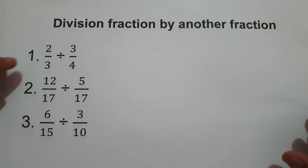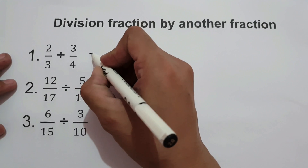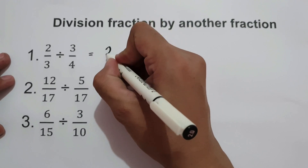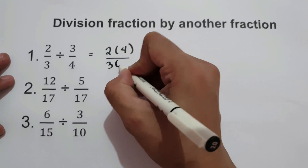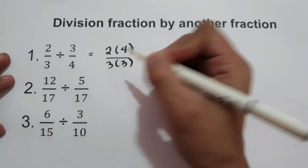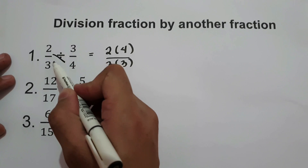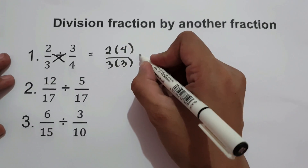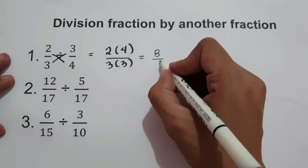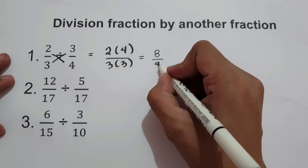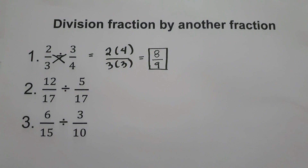For example, 2/3 divided by 3/4. We cross multiply: 2 times 4 over 3 times 3. So 2 times 4 is 8, and 3 times 3 is 9. The final answer is 8 over 9.